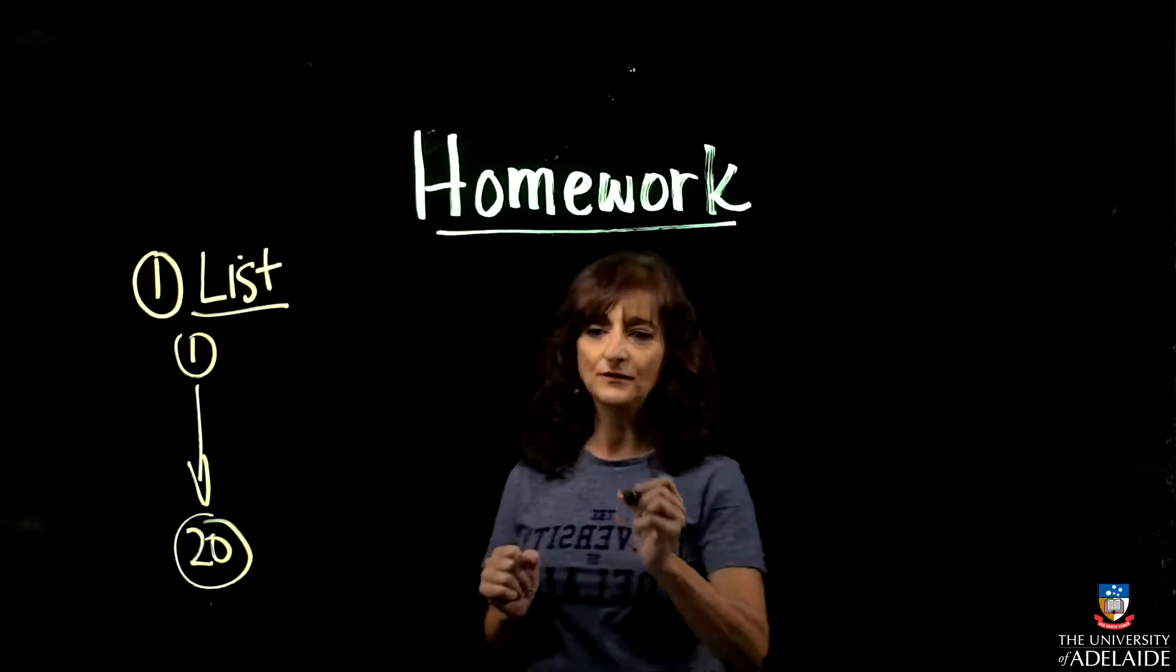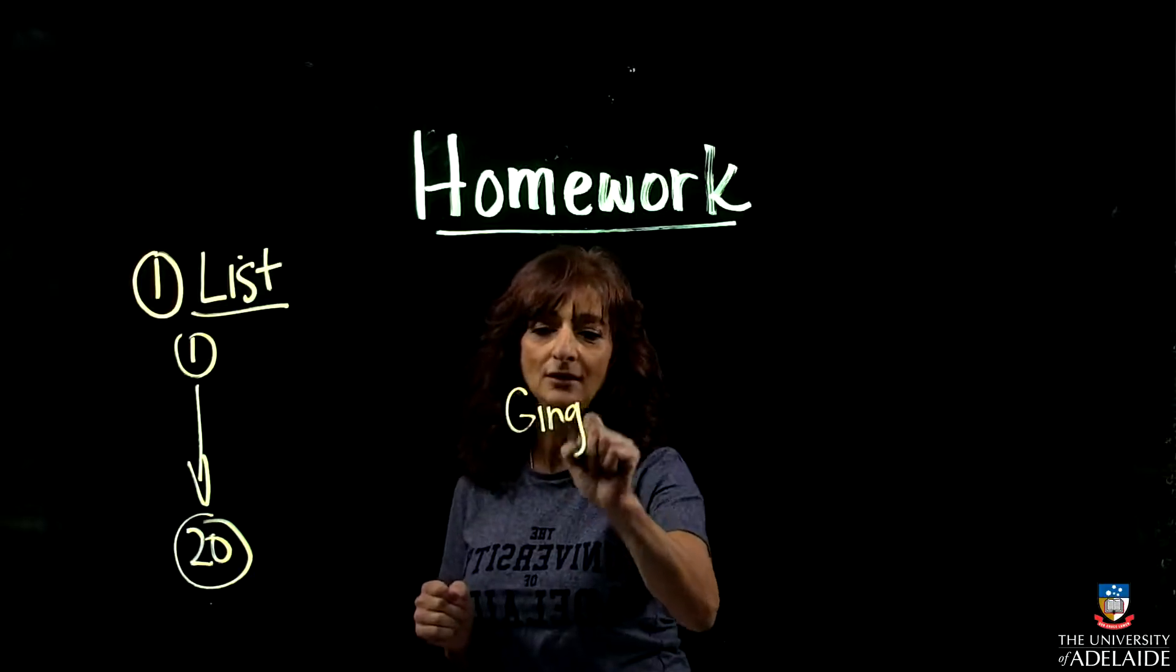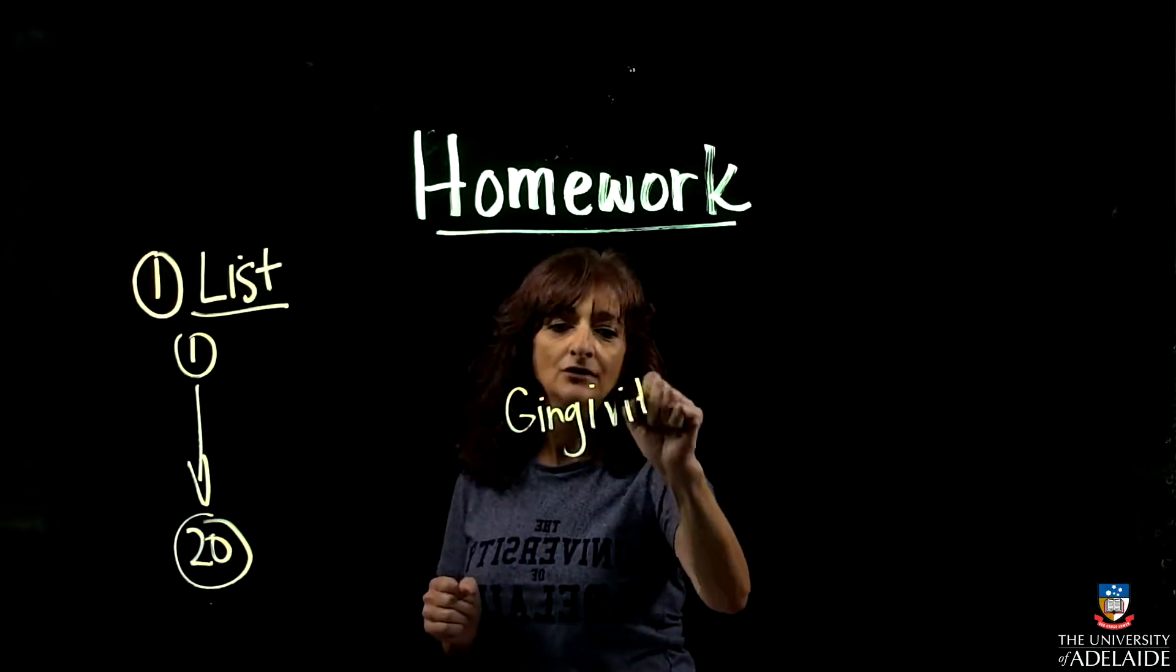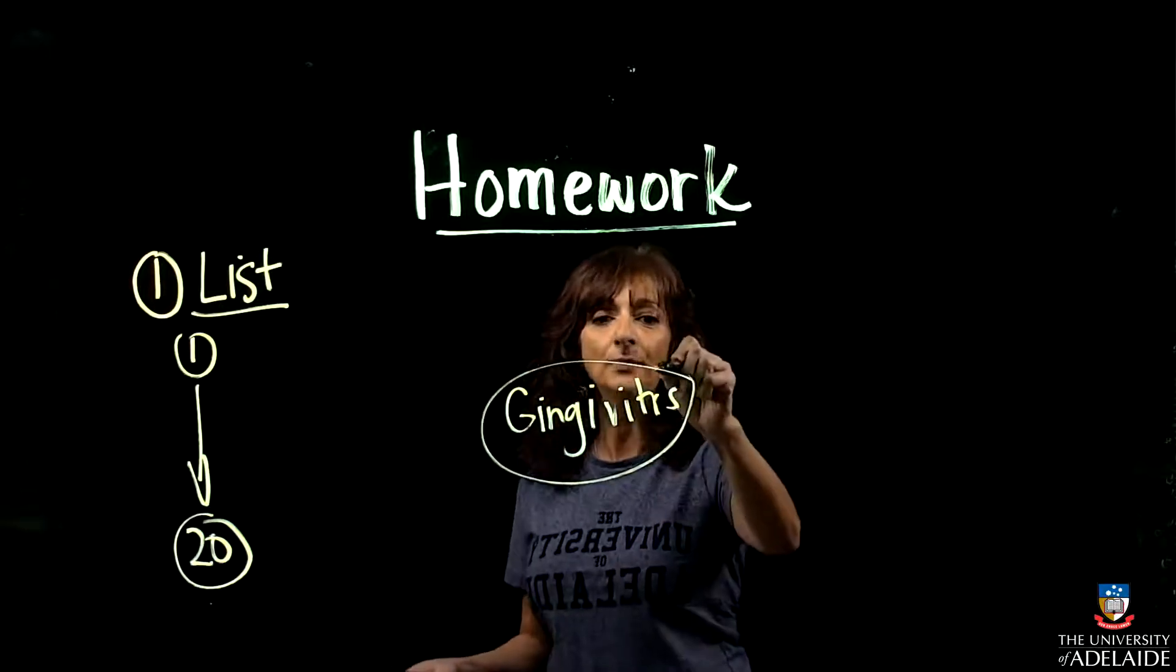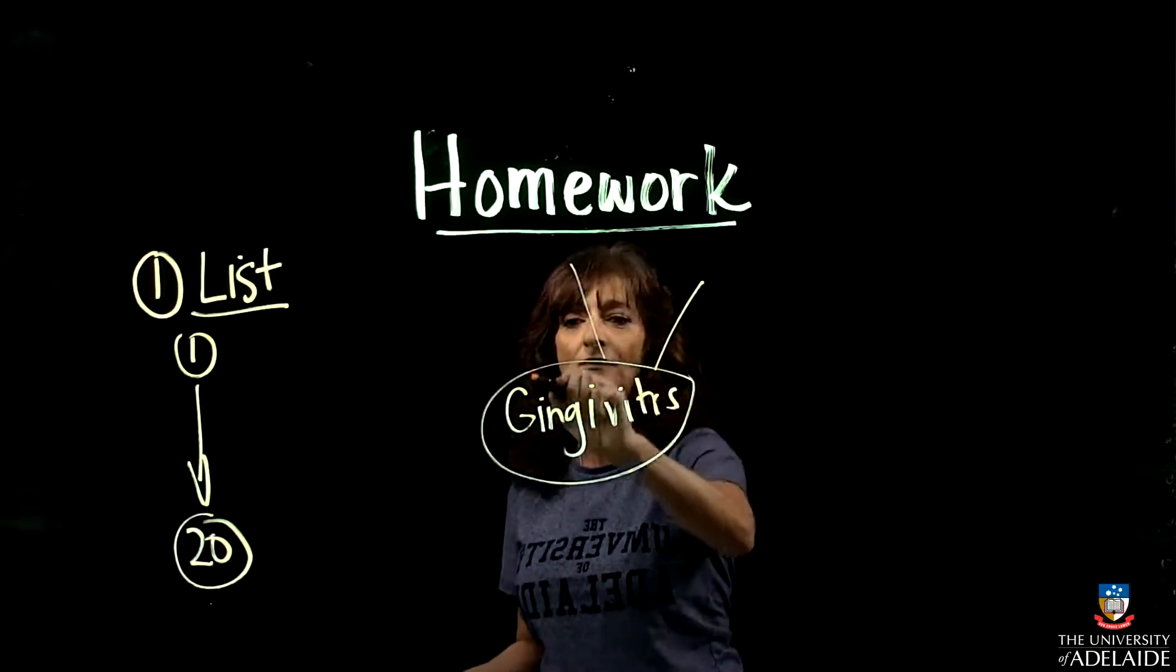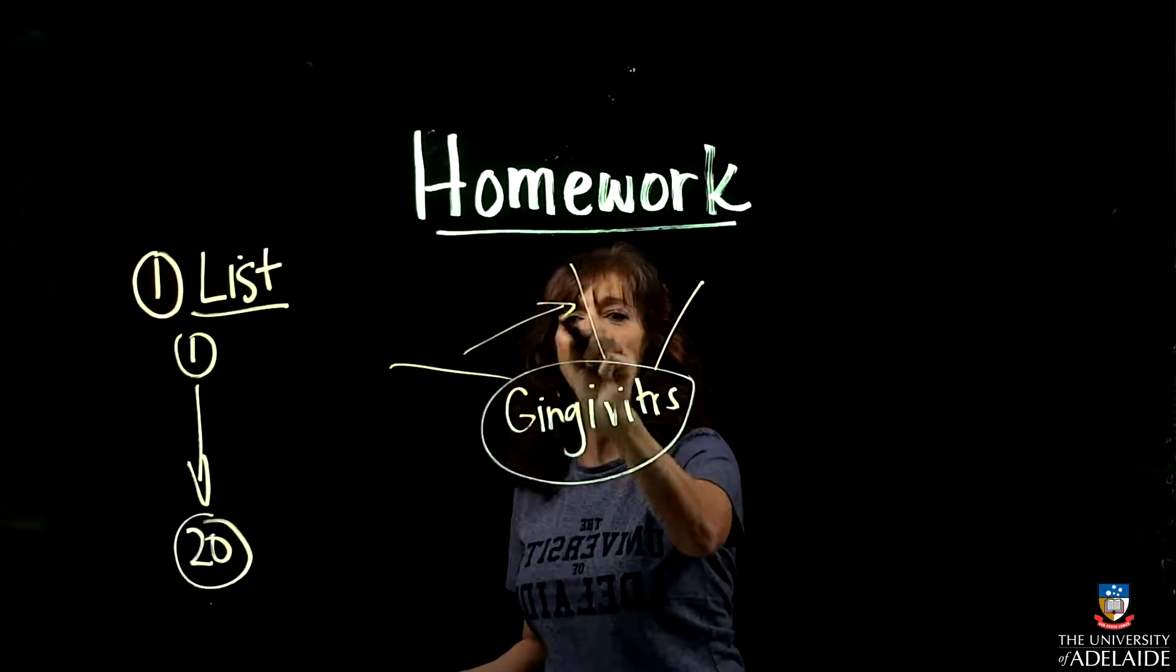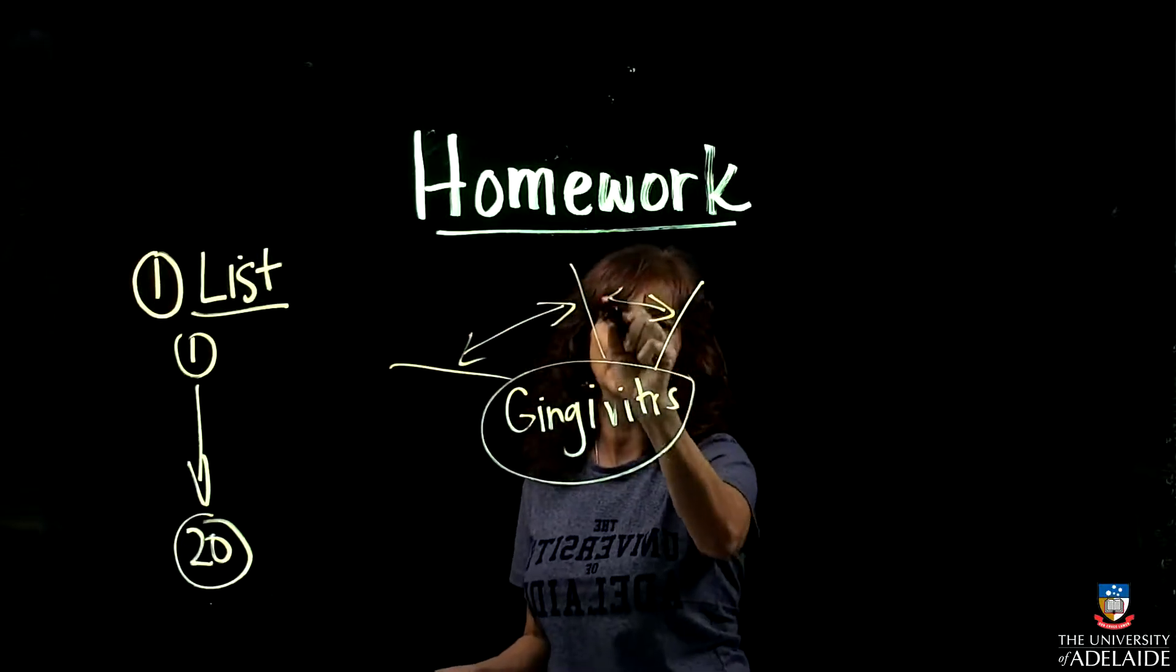The other option you've got is to prepare a more complex concept map. You can put gingivitis in the middle and then have the different parts of the pathogenesis coming off the central area, and then arrows connecting them, interrelating them.